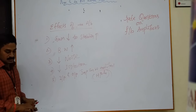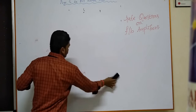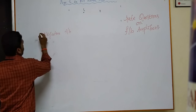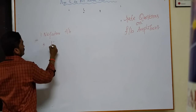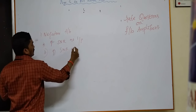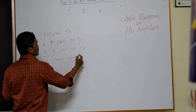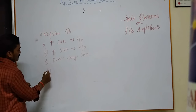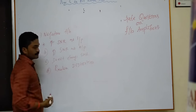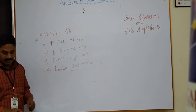Using these effects, the first gate question asks about the negative feedback amplifier. Option A: improves SNR at input side. Option B: improves SNR at output side. Option C: does not change SNR. Option D: reduces distortion. Just by looking at the options, you can see the last option — reduce distortion — is one of the effects of negative feedback amplifiers.